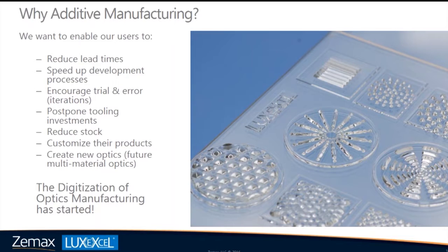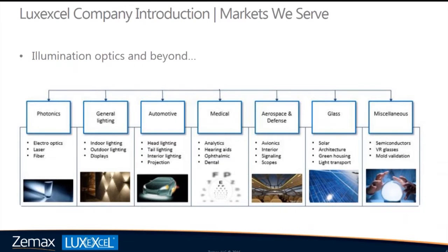Additive manufacturing gives new possibilities, as we've seen in metal or plastic printing — you can create new kinds of structures and stack different materials together. In the future, we hope to create new kinds of optics not possible any other way. For prototyping, we serve the photonics market, general lighting — which is the largest portion of our prototyping business — automotive, medical, aerospace and defense. The miscellaneous group includes virtual reality glasses, handheld devices, and mobile phones.